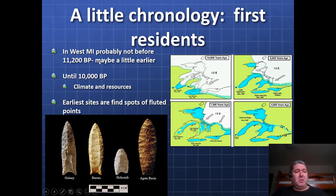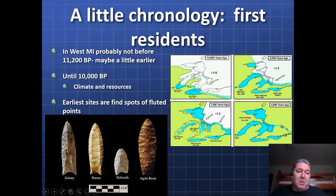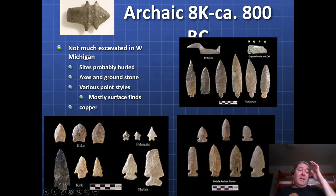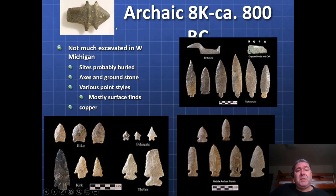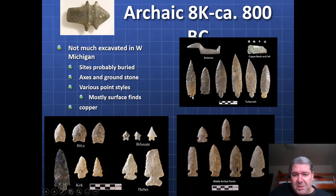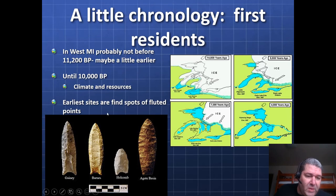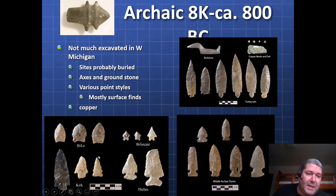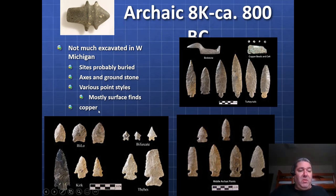The first residents in West Michigan probably arrived no earlier than 11,000 to 12,000 years ago, maybe a little earlier. Until about 10,000 years before present, these Paleo-Indians used fluted points — very highly related to Clovis culture, with a characteristic notch or flute. Looking at the Archaic culture now: not much excavated in West Michigan, but we see a lot more axes and groundstone tools with various styles of projectile points — much more notching — to attach the sticks. We also see the first evidence of the use and mining of copper from the UP during this Archaic period.